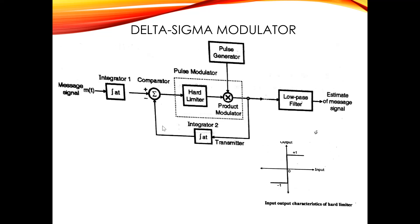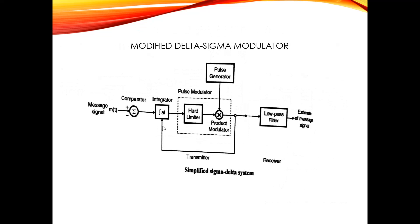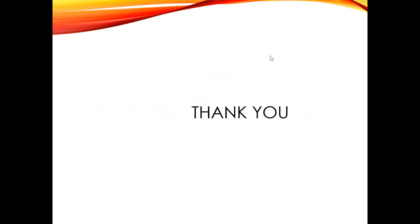The hard limiter produces -1 for negative input and +1 for positive input. The hard limiter output (±1) is applied to a multiplier (product modulator), with the other input being clock pulses from an external pulse generator. The clock pulse frequency should be higher than the Nyquist rate. At the output of the product modulator, we get the sampled version of the limiter output, which is transmitted as a one-bit encoded signal. The same output is applied to a second integrator, whose output is compared with integrator 1 output. In the simplified delta sigma modulator, since integration is a linear operation, integrator 1 and integrator 2 can be combined into one integrator placed after the comparator, simplifying the transmitter design.